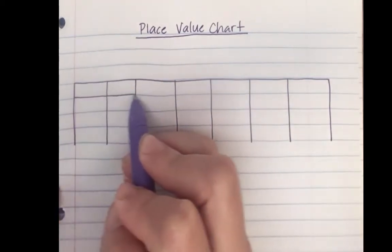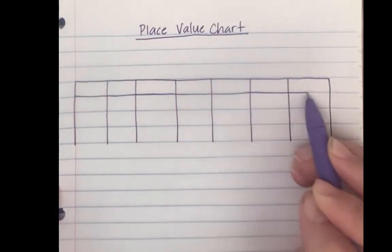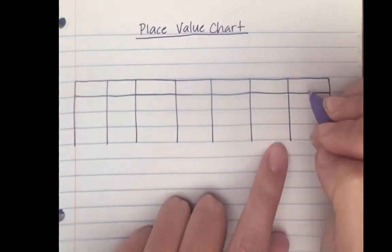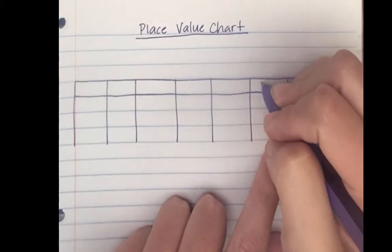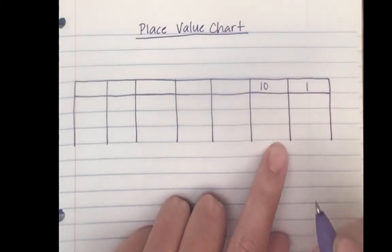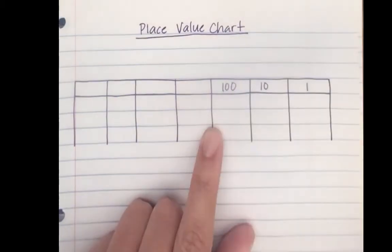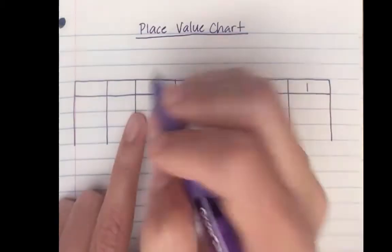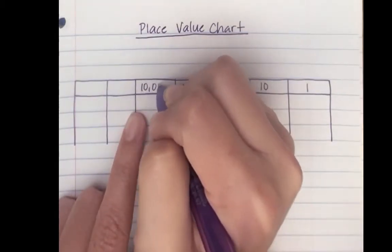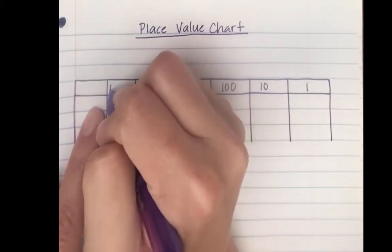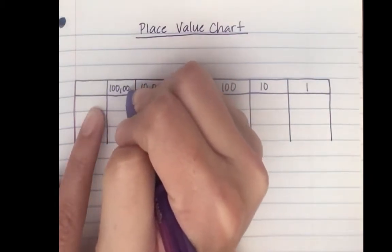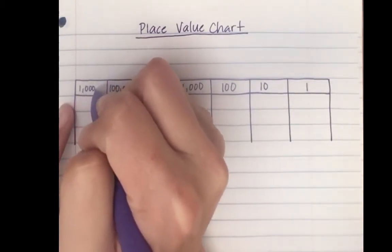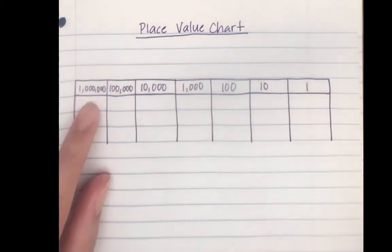I'm going to write: one, ten, one hundred, one thousand, ten thousand, one hundred thousand, and one million.